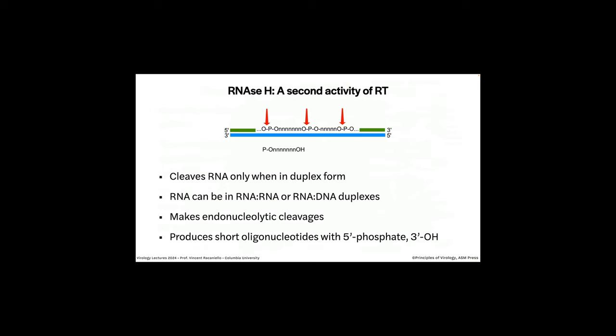Besides reverse transcriptase activity — copying RNA to DNA — the enzyme has a second activity called RNase H. This cleaves RNA, but only when it's in duplex form (DNA-RNA or RNA-RNA). When in duplex form, RNase H will degrade it; if single-stranded, it will not touch it. It makes endonucleolytic cleavages — cuts internally, not from the ends (exonucleases chew from the ends). The cuts are between an oxygen and a phosphate, making short oligos with a 5' phosphate. The purpose is to get rid of the RNA once we've made a DNA copy.